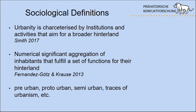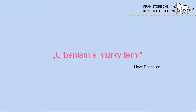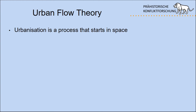There are many umbrella terms applied: pre-urban, proto-urban, semi-urban — people try to get around the definition and attribute something to it, saying it's a little bit urban without committing to a full definition. Urbanism is a murky term and probably we should ditch it, but that just leads to the next umbrella term. So we stick to urbanism, but what I will try to do is connect it with urban flow theory from spatial and socio-geography.